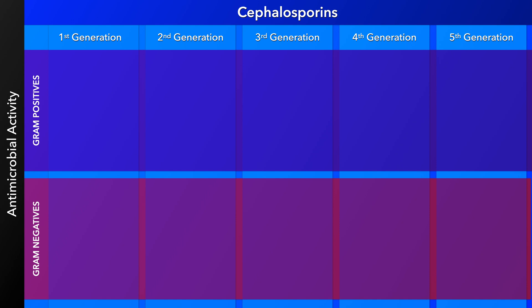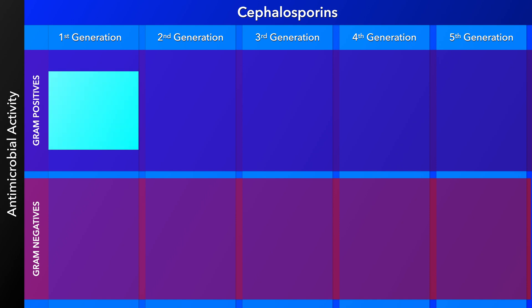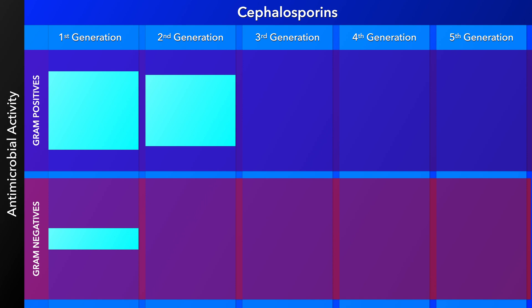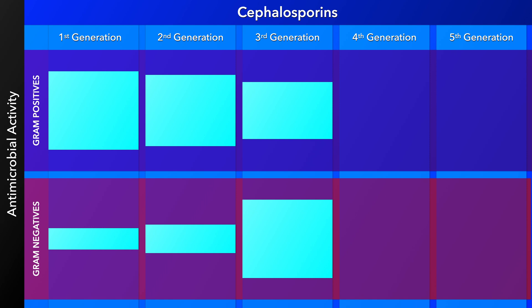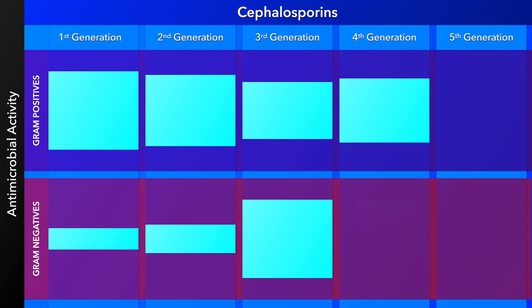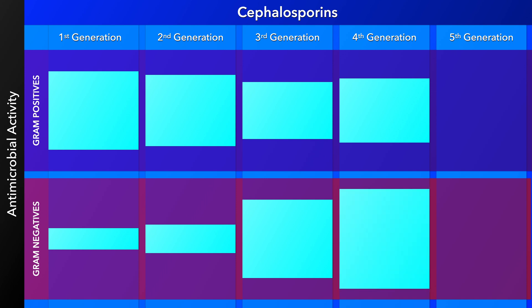The first generation of cephalosporins has good gram-positive but limited gram-negative coverage. Second generation cephalosporins are slightly less effective against gram-positive organisms but increase coverage against gram-negatives. Third generation cephalosporins have even less coverage against gram-positives than the preceding generations, but have even greater coverage against gram-negatives. The fourth generation maintains good gram-positive coverage while having the most activity against gram-negative organisms, and is effective against the gram-negative rod Pseudomonas.